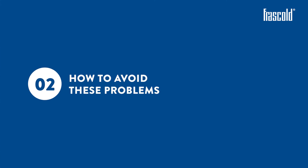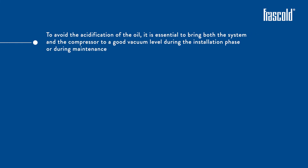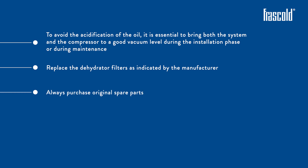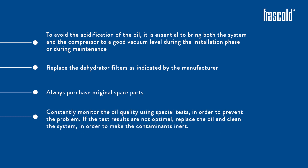How to avoid these problems? To avoid the acidification of the oil, it is essential to bring both the system and the compressor to a good vacuum level during the installation phase or during maintenance. Replace the dehydrator filters as indicated by the manufacturer, and always purchase original spare parts. Finally, constantly monitor the oil quality using special tests in order to prevent the problem. If the test results are not optimal, replace the oil and clean the system in order to make the contaminants inert.